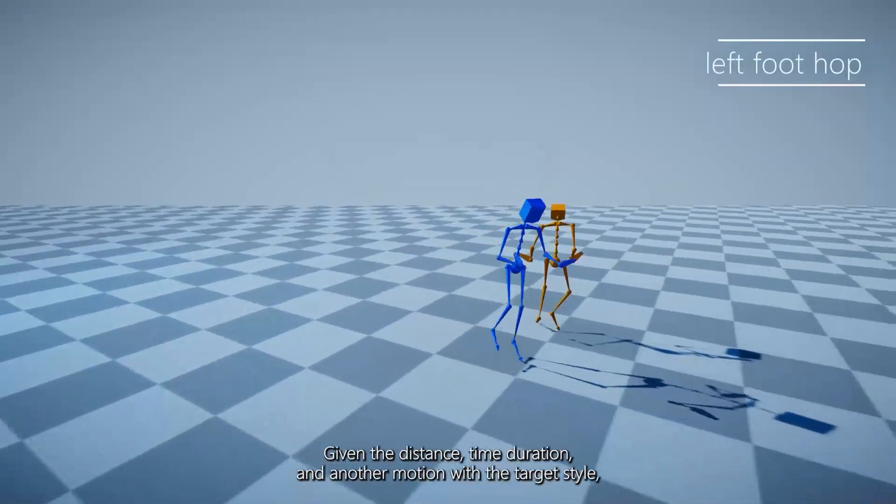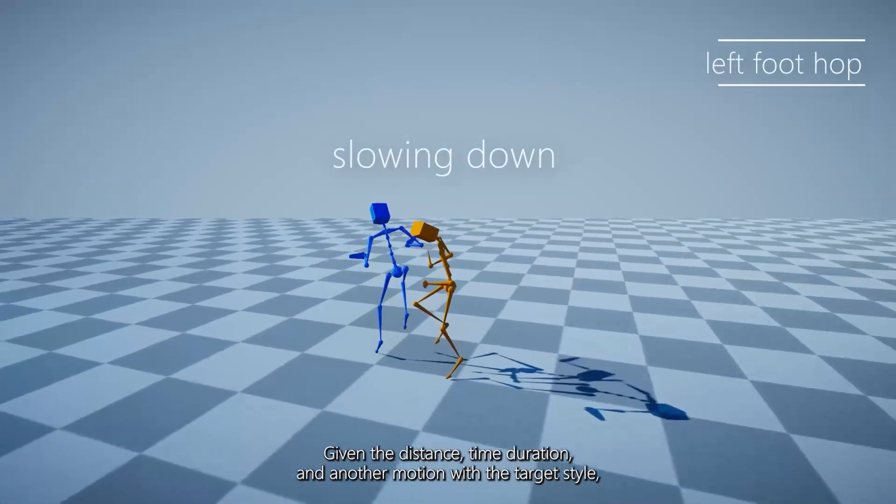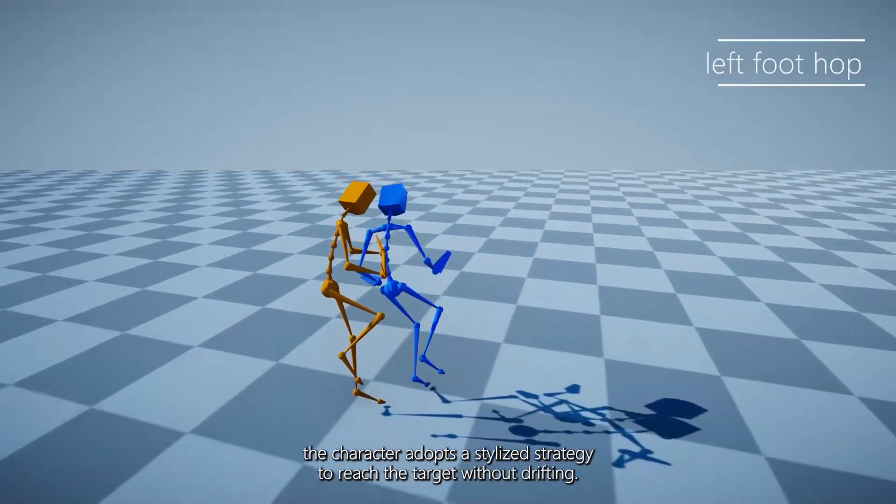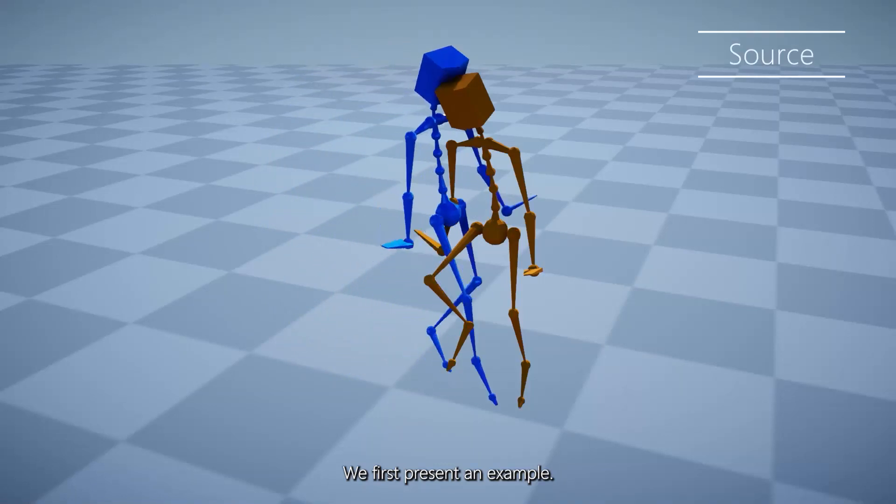Given the distance, time duration, and another motion with the target style, the character adopts a stylized strategy to reach the target without drifting. We first present an example.